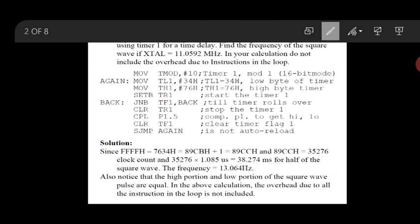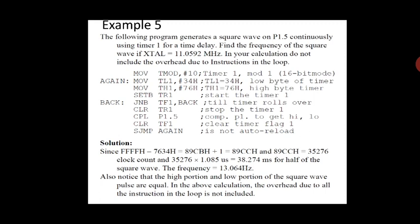Since we are using Timer 1, we must use TL1 and TH1. Read the given statement carefully to identify which timer you are using and which timer you need to configure. TL1 is loaded with 34H and TH1 is loaded with 76H — the lower byte and higher byte respectively. We then start the timer using the SETB instruction. You must follow the sequence as given; you cannot change the order.